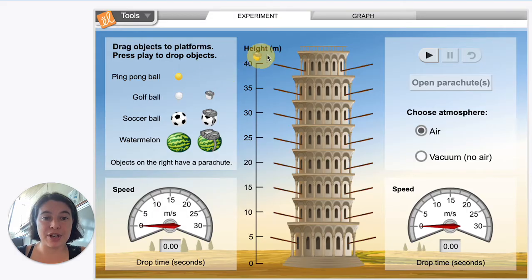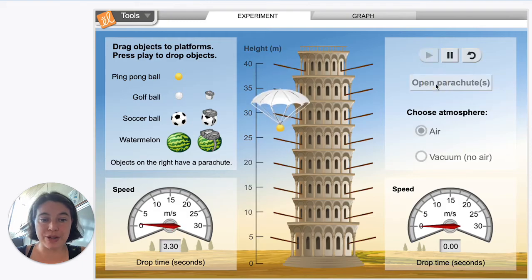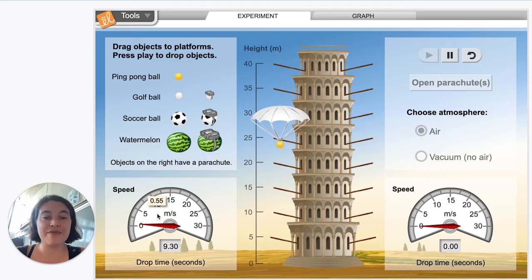We will start with a ping pong ball. We're going to let it fall, and then we're going to open that parachute up. And you can see as soon as we opened that parachute up, the velocity of this ping pong ball plummeted.